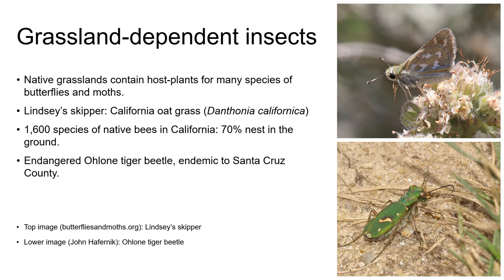In Santa Cruz County, our endemic and endangered Ohlone tiger beetle, which you can see on the bottom right here, is found in coastal prairie, where it favours places where the vegetation is sparse. These days, these areas where the vegetation is sparse are often found adjacent to trails, and mountain biking and other recreational uses are considered a major threat to the survival of this local endemic.